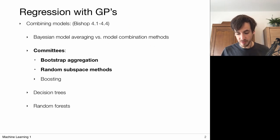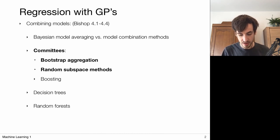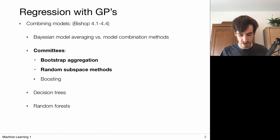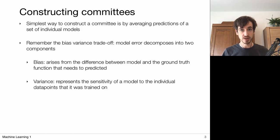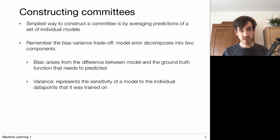We just introduced the idea of model combination methods and put it in contrast to what we already saw, namely Bayesian model averaging. Now I'm going to explicitly show some methods to form these committees, namely via bootstrap aggregation and via the random subspace method. The simplest way to construct a committee is by training several models and letting the eventual prediction be the average over these models. But then we need ways to train these different models.